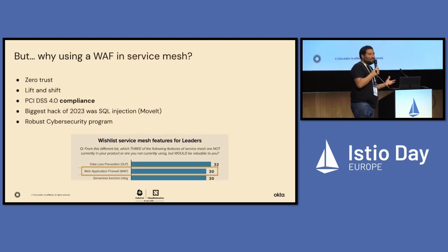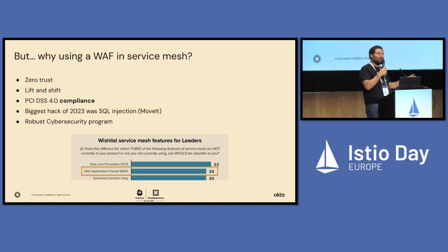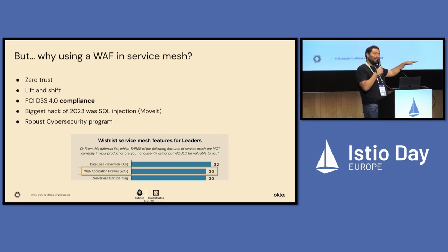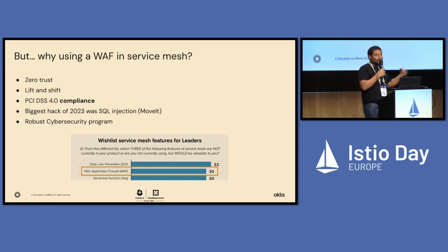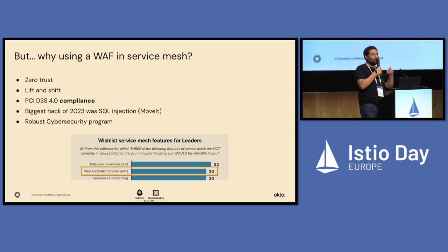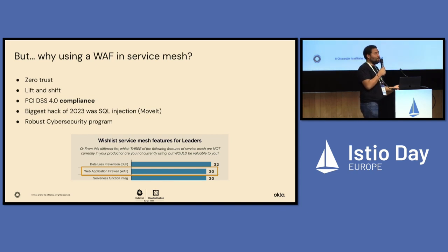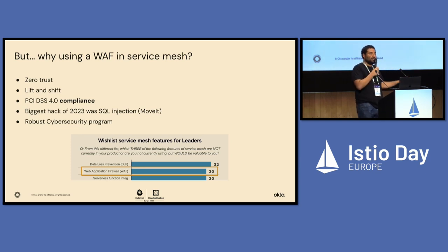But why use WAF in a service mesh? First, zero trust — zero implicit trust is all about protecting your components as if the attacker is inside. Even though you might think a WAF should be happening at the ingress level, you also want to protect individual workloads that are more sensitive, as part of a broader cybersecurity strategy. Even traffic coming from a trusted source, like a service in your deployment, you also want to analyze — not with the same level of paranoia as at ingress. Lift and shift is also happening very often now. You put old stuff in the cloud, and it comes with vulnerabilities, so you want a WAF in front to protect it.